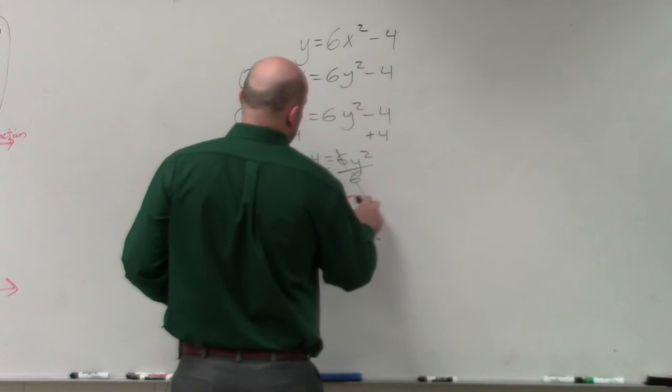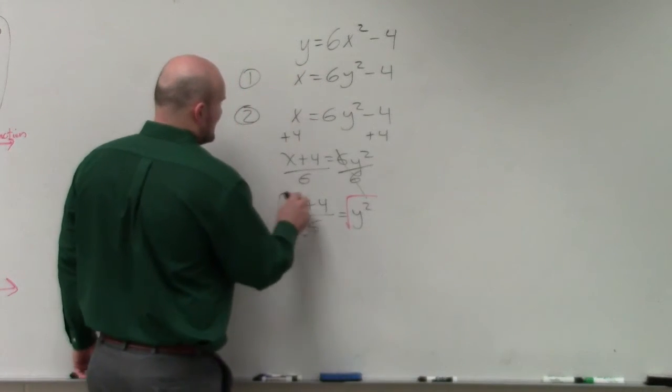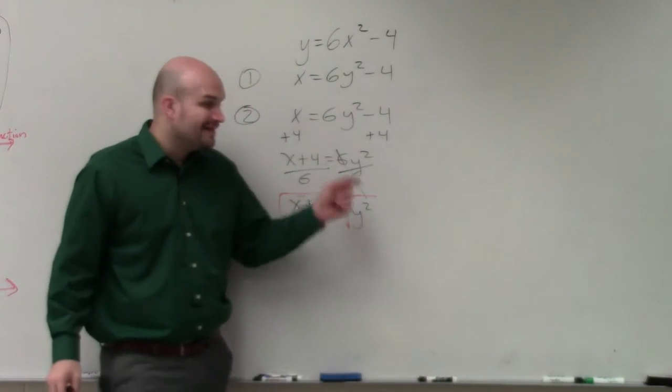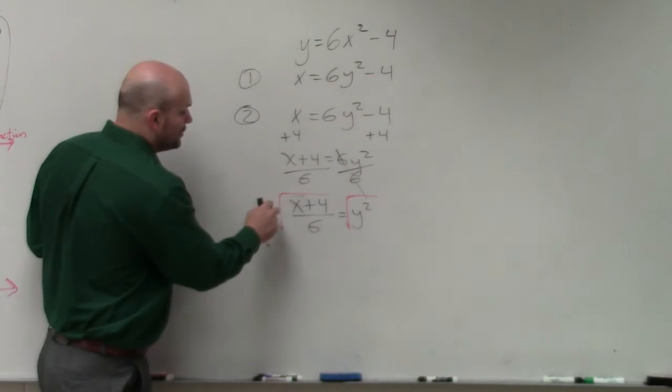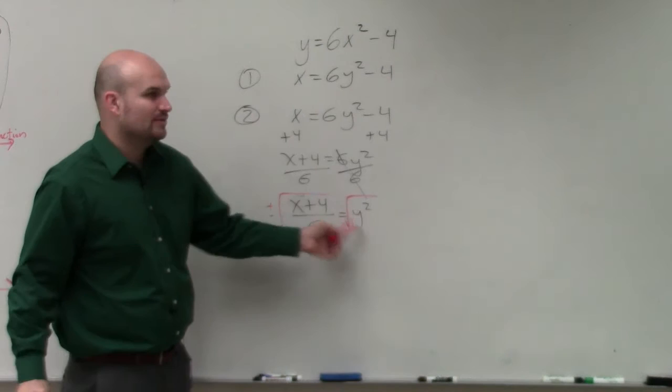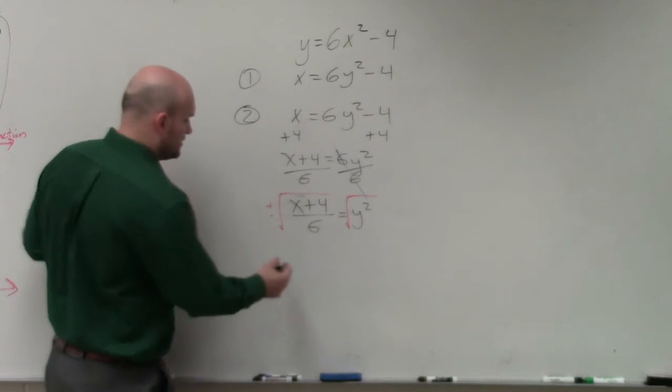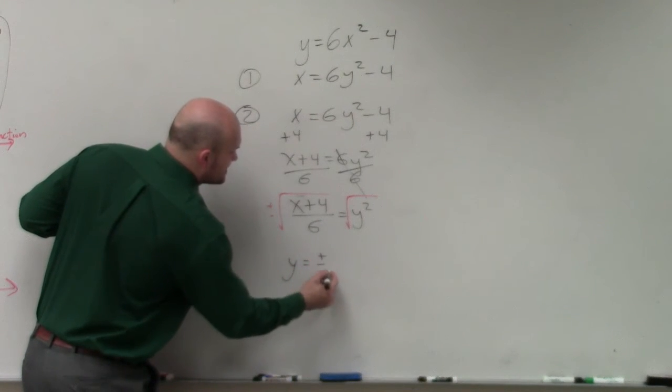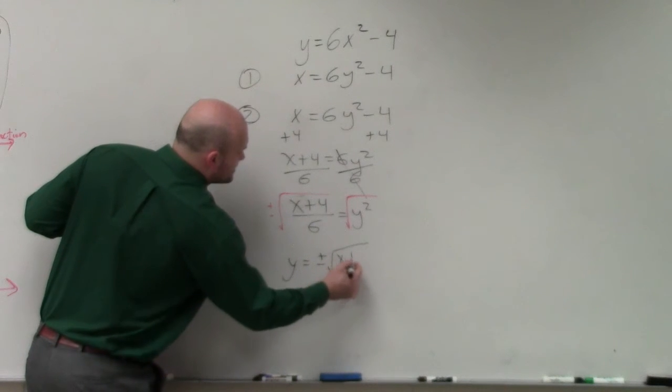Please remember, guys, this is not the first time we've gone over this. When you introduce the square root, you have to include plus or minus, correct? So I'm going to write the y on the left side, it doesn't really matter. But y equals plus or minus the square root of x plus 4 divided by 6.